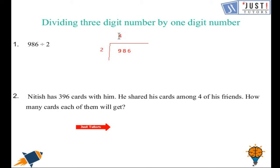We have a remainder of one that carries to the eight. Two goes into 18 nine times because two times nine is 18. Then two goes into six three times — two times three is six. So our answer is 493.